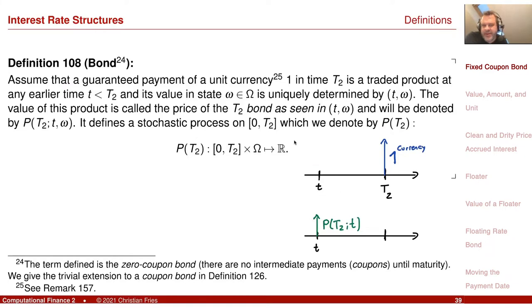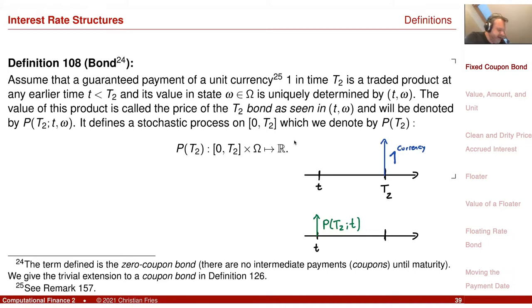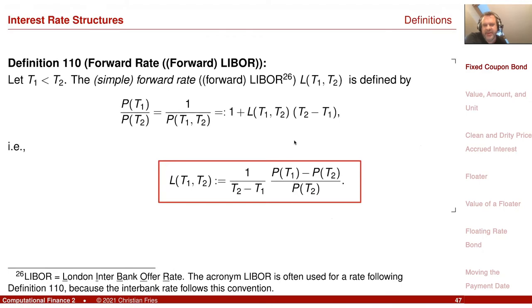The payment is guaranteed. The question is: what is the value of this payment observed at an earlier time, for example, little t? Our assumption is that we can observe this value on the market, so we can trade this financial product, and the observed value is then P of T2 observed at little t. From that, we derived many different definitions of interest rates, and the important one for us in this section is the forward rate — the relative performance of two such payments at different times in the future, expressed on a per-time basis.